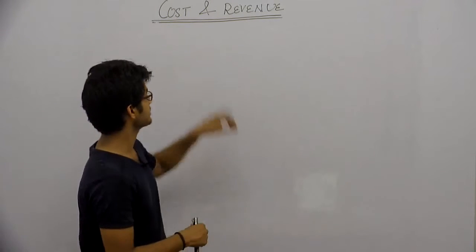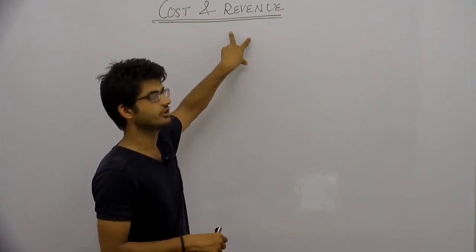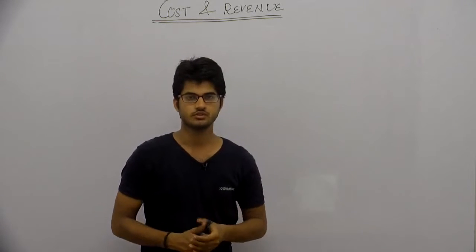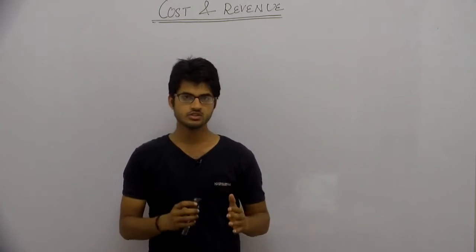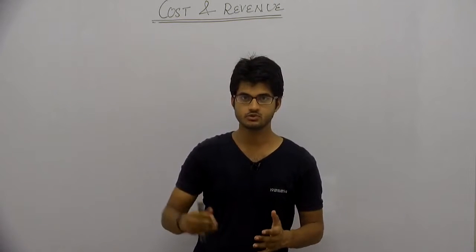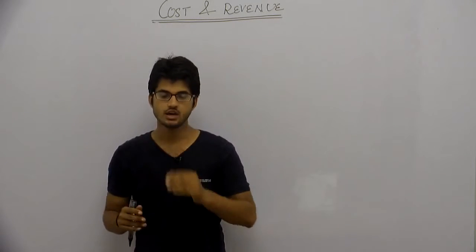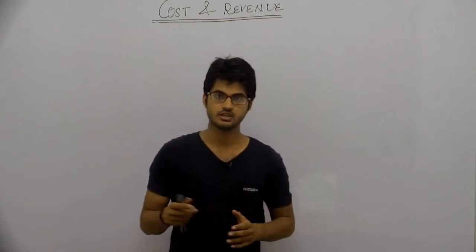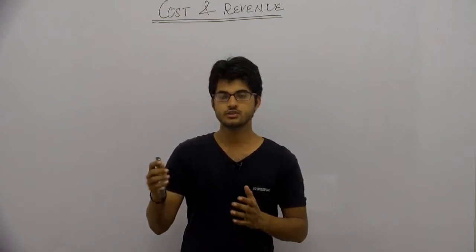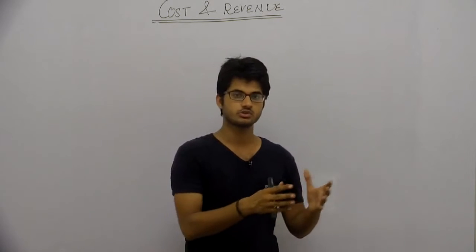So far we have discussed the cost, now we will be covering the revenue part of this chapter. Revenue is the sum total of all the receipts that a producer gets from selling the output that he has produced. Total revenue is the amount that the producer receives.